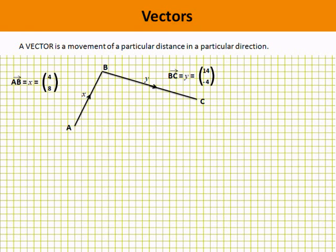If we wanted to go backwards from C to B, then that vector would be called CB. It would be minus Y because it's Y backwards, and instead of 14, minus 4, it would be minus 14, plus 4, representing 14 backwards and four up to get from C to B.